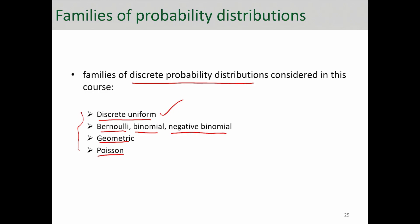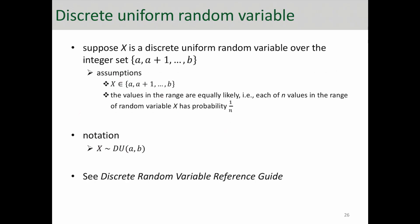Let's start with discrete uniform first. Suppose that X is a discrete uniform random variable over the integer set from a, a plus 1, all the way to b. This is the range of random variable X — from one integer to another. A is the starting point, b is the ending point. The values in the range are equally likely, and that is the main characteristic of a discrete uniform random variable. So if you have n values in the range, the probability of each is just 1 over n.